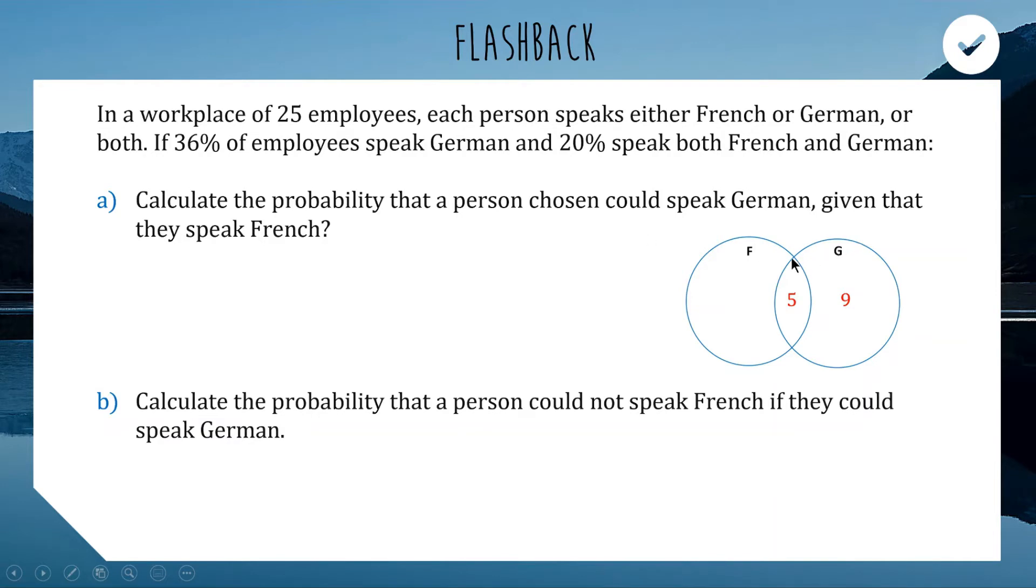Now, the issue with that is now my German circle is saying that we have 14 people who speak German when we're only supposed to have nine people that speak German. So, we're going to fix this by turning that nine into a four and now we have nine German speakers but five of those people also speak French. That's a slight trick to it. So, we've got five and four here makes nine. So there must be 16 people left over to go in the French only circle just here. So, calculate the probability someone could speak German given that they speak French. Given that we're choosing out of these 21 French speakers, what's the chances we get someone who's also in the German circle? Well, we've got a five out of 21 chance. Five German speakers out of 21 French speakers. So, this says probability of speaking German given that they speak French.